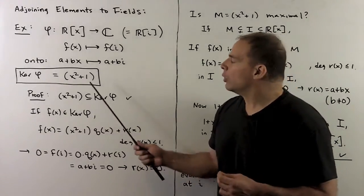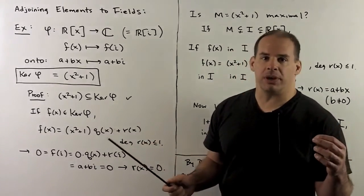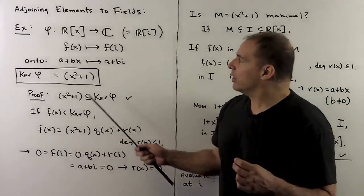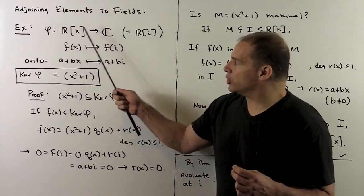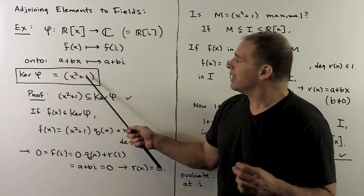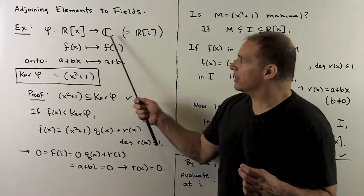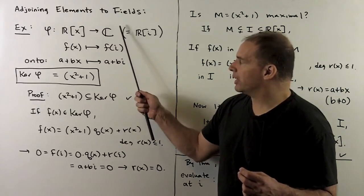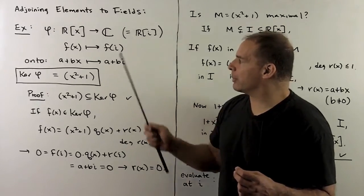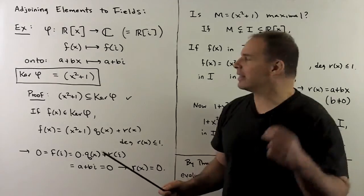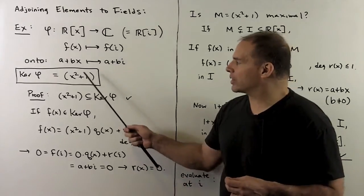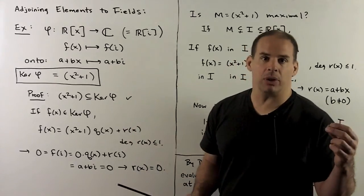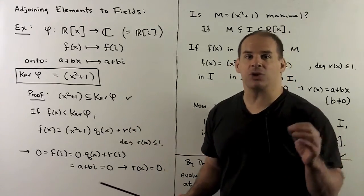When we invoke the first isomorphism theorem, the quotient of ℝ[X] by the ideal (X² + 1) is isomorphic to the complex numbers. Since the complex numbers are a field, we expect the ideal (X² + 1) to be maximal. Let's check that directly.